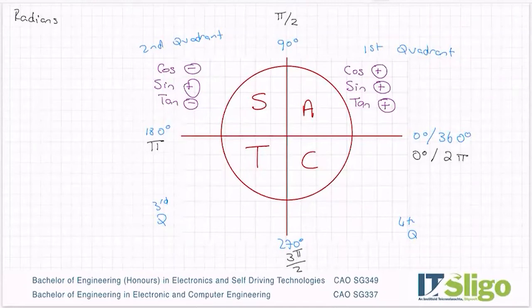And the third quadrant is the same. You can see T for tan, so cos is going to be negative, sine is going to be negative, tan is going to be positive. And then here cos is positive, sine is negative, tan is negative.